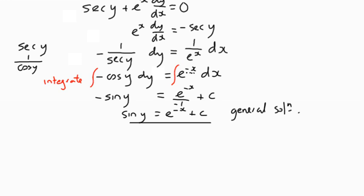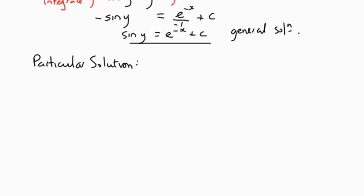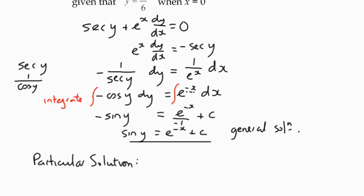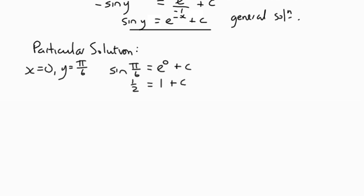We can find a particular solution by introducing the given values at one particular point. We're given that y equals pi over 6 when x equals 0. So substituting x equals 0 and y equals pi over 6, we've got sin of pi over 6 equals e to the 0 plus c. So c has the value of negative a half.